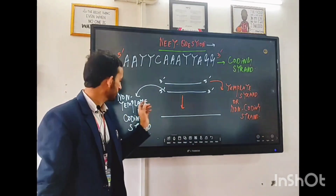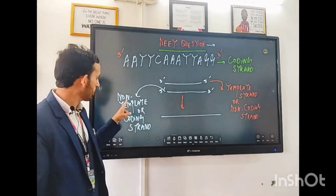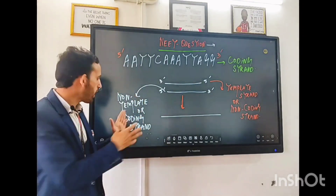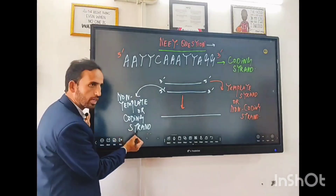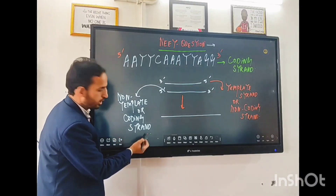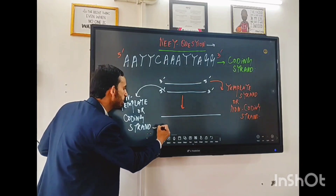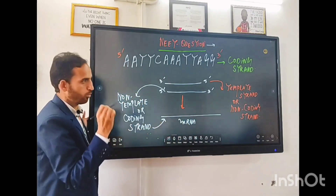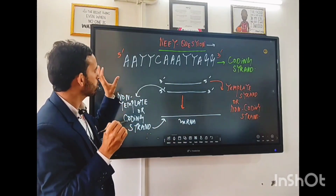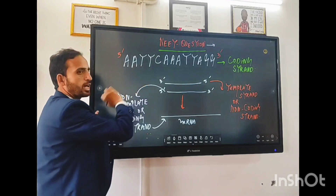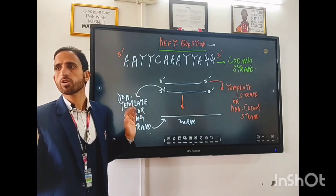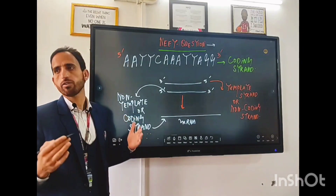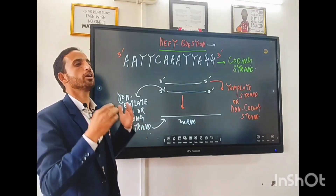How will we approach this question? Why is it called the coding strand? Non-template strand means that strand which is not used for the formation of the mRNA. Why is it called the coding strand? Because the significance of this strand will be similar to the new mRNA strand. The only exception is that thymine will not be present in the mRNA strand. In the place of thymine, you will have another very important base called uracil.